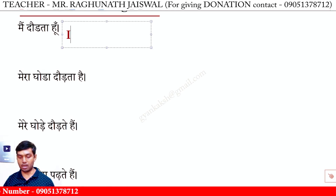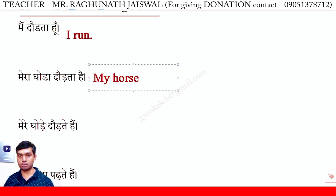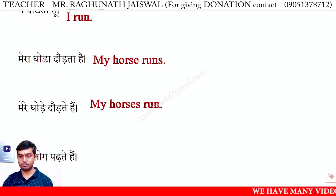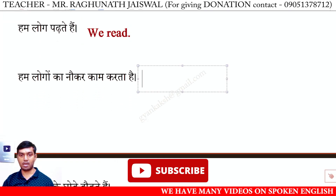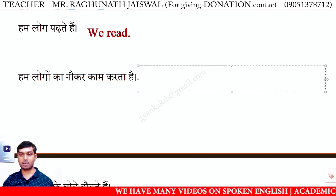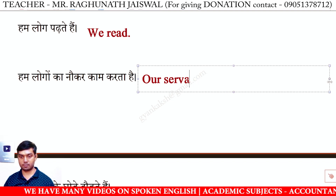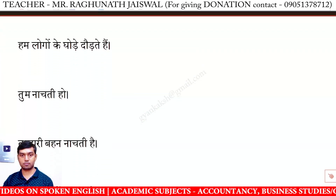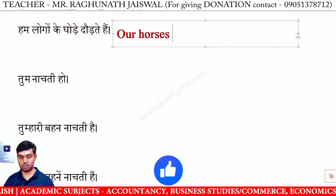मैं दौड़ता हूँ — I run. मेरा घोड़ा दौड़ता है — My horse runs. मेरे घोड़े दौड़ते हैं — My horses run. हम लोग पढ़ते हैं — We read. हम लोगों का नौकर काम करता है — Our servant works. हम लोगों के घोड़े दौड़ते हैं — Our horses run.